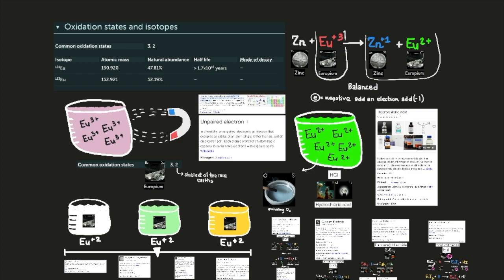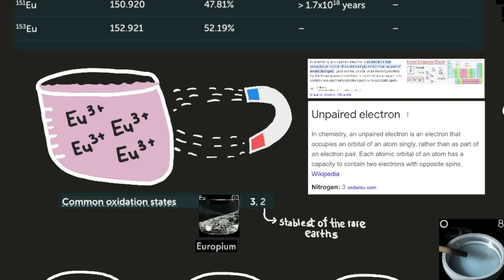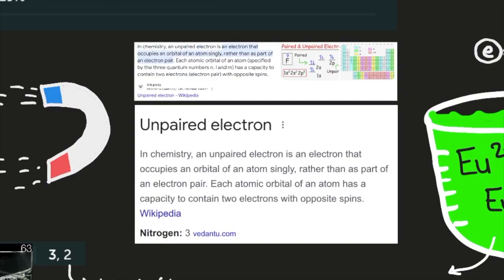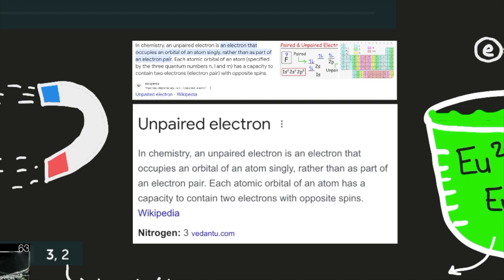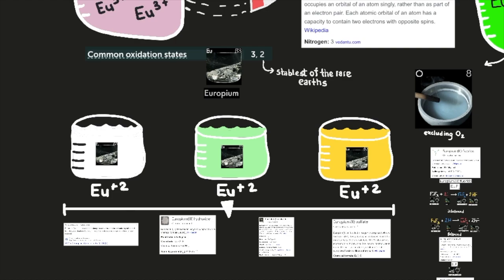It is predominant oxidation state of plus 3. Europium behaves as a typical rare earth, forming a series of generally pale pink salts. The EU3+ ion is paramagnetic because of the presence of unpaired electrons. In chemistry, an unpaired electron is an electron that occupies an orbital of an atom singly, rather than as part of an electron pair. Each atomic orbital of an atom, specified by the three quantum numbers n, l, and m, has a capacity to contain two electrons, electron pair with opposite spins, according to Wikipedia.